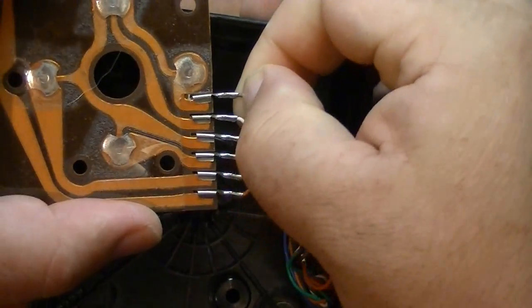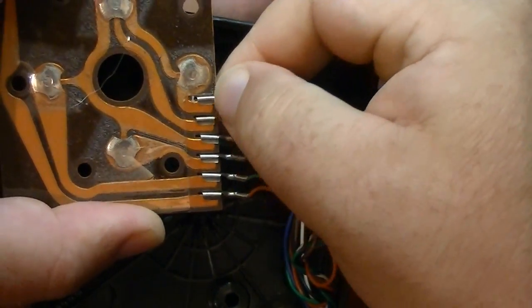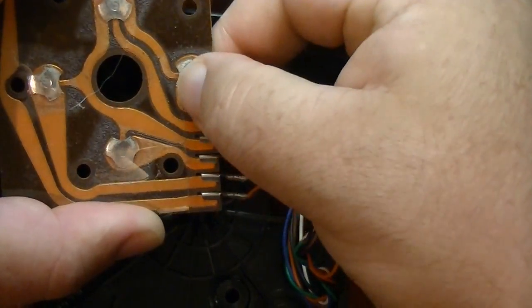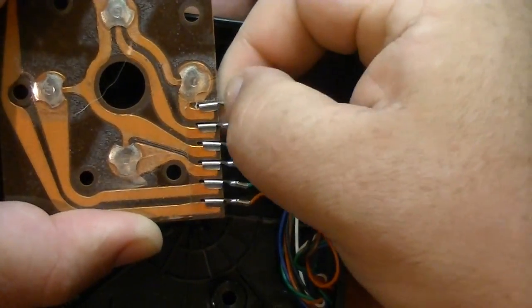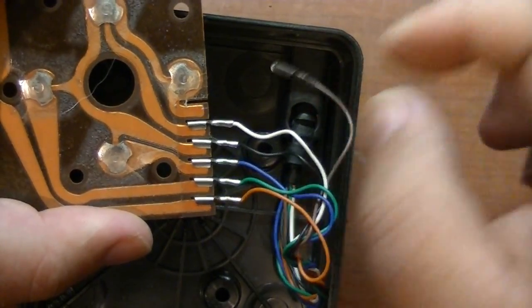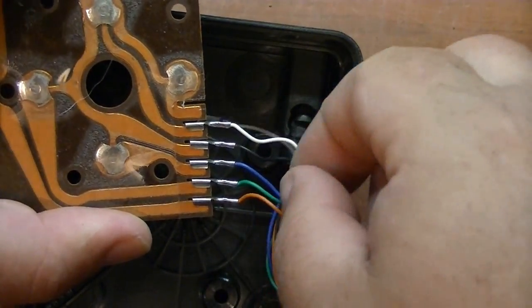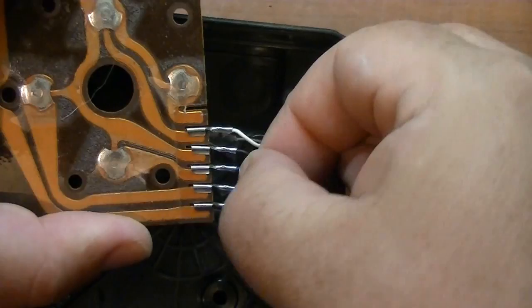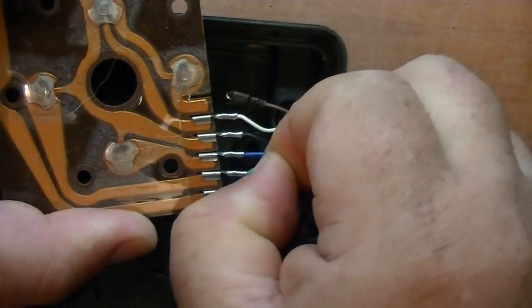So we're going to take off the brown wire off the top here. And then we're going to take the blue wire off and move the blue wire where the brown wire was.